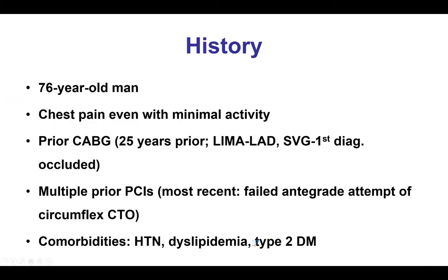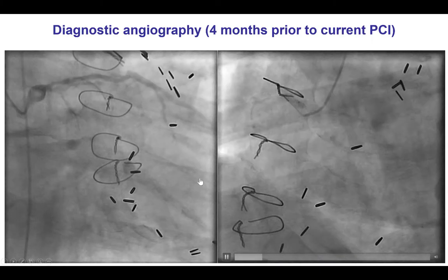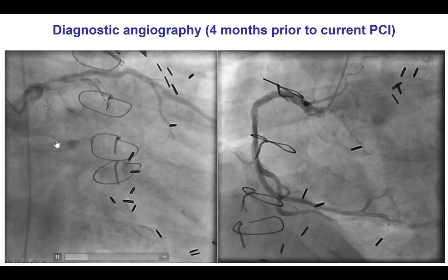The patient was an elderly man who had previous coronary bypass with a LIMA to LAD and a vein graft to the first diagonal that was occluded. He had multiple previous PCIs and most recently he presented with recurrent angina and was found to have a circumflex CTO that failed an attempt for re-canalization. He had hypertension, dyslipidemia, and type 2 diabetes, and this was his angiography.